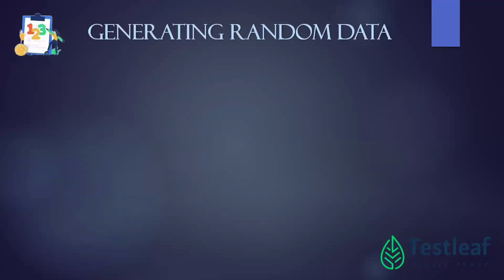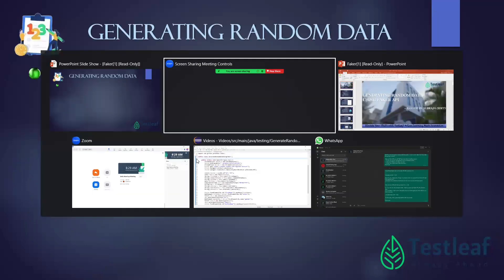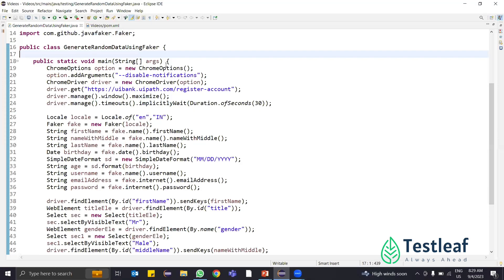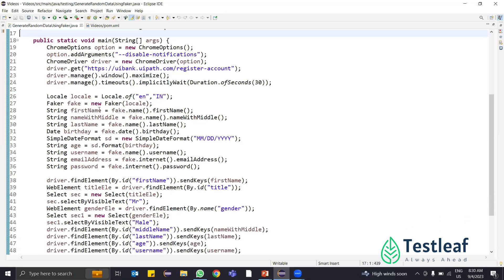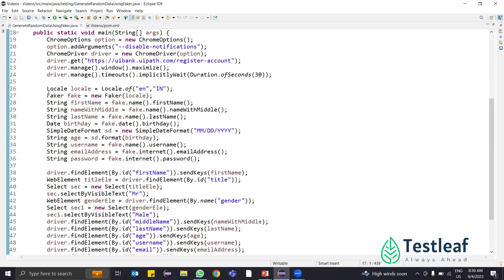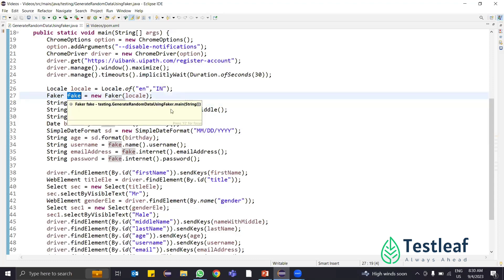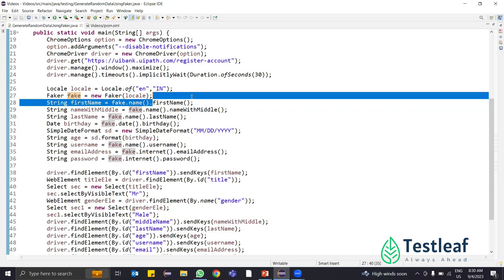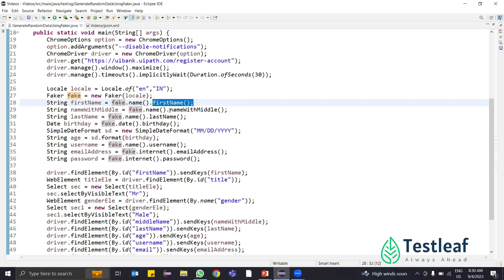Let's go to the code. I have written code with UI Bank path where I have to fill in a registration form. I have created a Faker class and created an object for it. The method name is fake. I'll use the object name fake and call the method name. If I want to generate first name, I'll call firstName. If I want to generate a middle name, name.middleName. If I want to generate last name, fake.name and I'll call lastName.